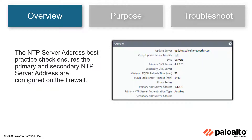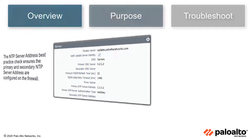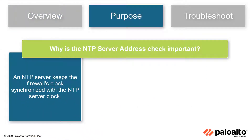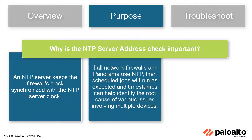The NTP server address best practice check ensures the primary and secondary NTP server addresses are configured on the firewall. An NTP server keeps the firewall's clock synchronized with the NTP server clock. If all network firewalls and Panorama use NTP, then all of them have synchronized clocks, so scheduled jobs run as expected and timestamps can help identify the root cause of various issues involving multiple devices.